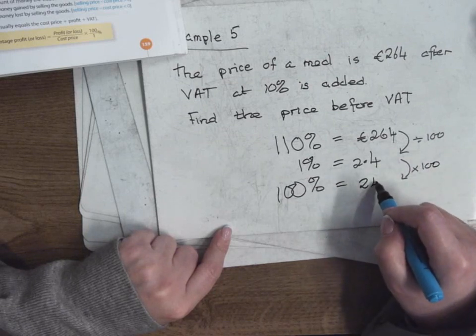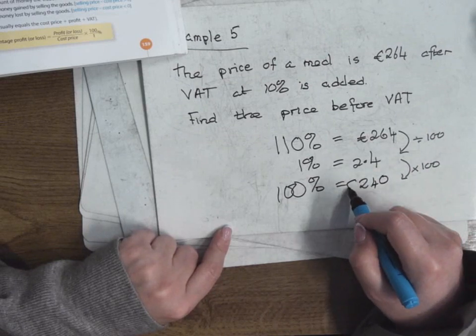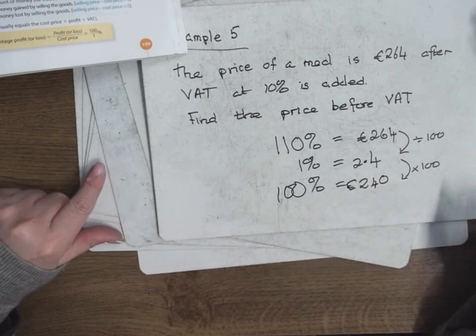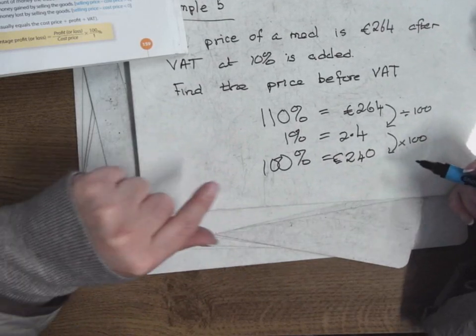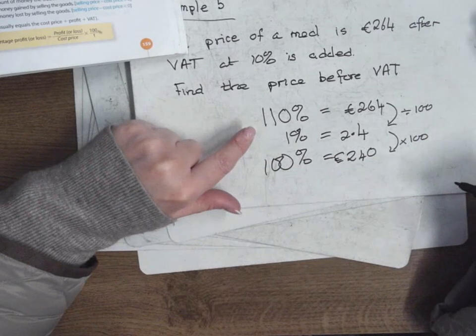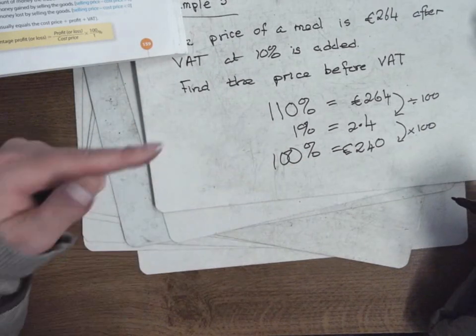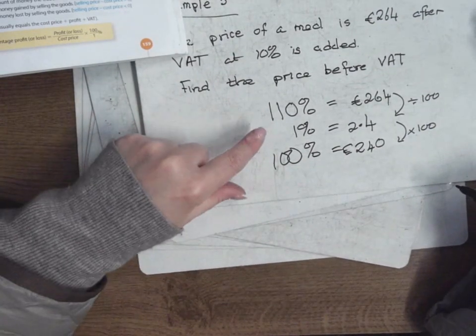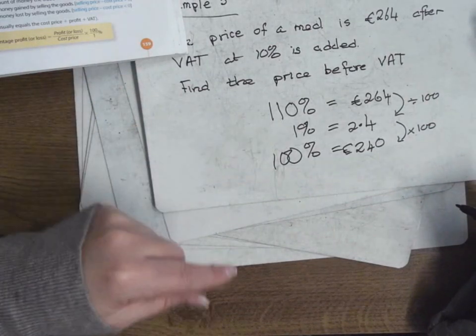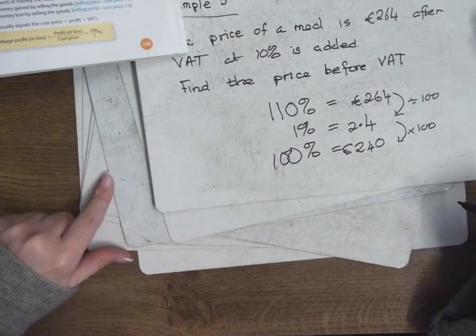And that will give me €240. Is that okay? So the one last night we started at 100 and went to 120. This one we're starting with 120 or 110 or whatever and going back to 100.